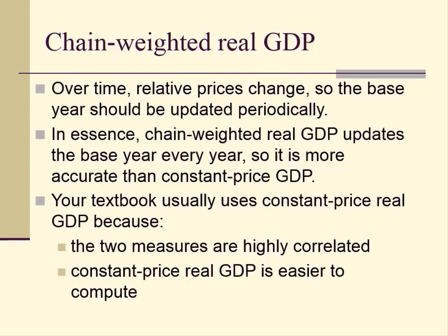Briefly on chain-weighted real GDP: over time, relative prices change, so the base year should be updated periodically. In 1995, the Bureau of Economic Analysis introduced chain-weighted real GDP, which updates the base year every year using average prices of consecutive years. This is more accurate than constant-price GDP. However, textbooks typically use constant-price real GDP because the two measures are highly correlated and constant-price real GDP is easier to compute.